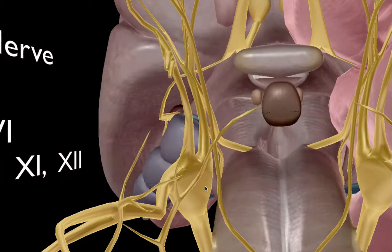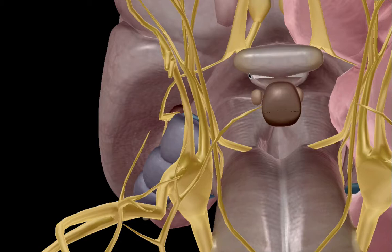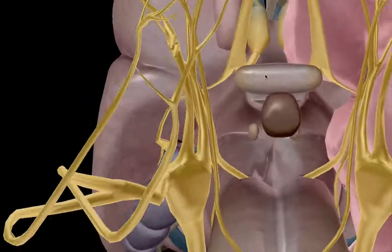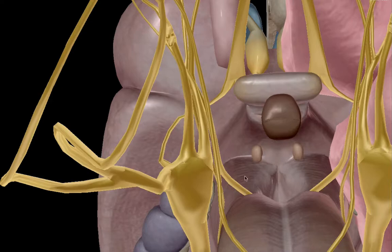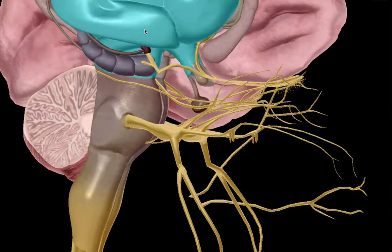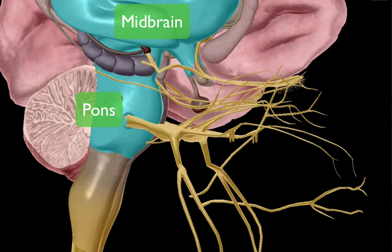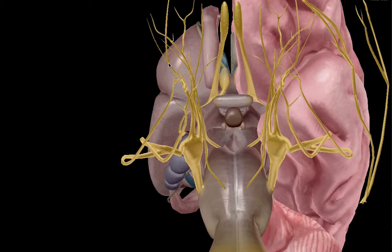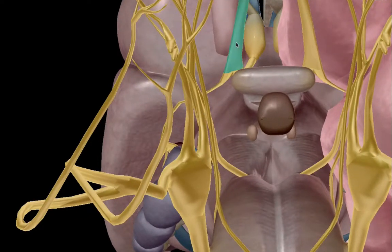Let's take a look at these cranial nerves. I'm going to split the first six into two sections of three. The first group all begin with the letter O. We're getting a base view of the cranium, and these cranial nerves are located on the midbrain and the pons of the brain stem.